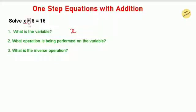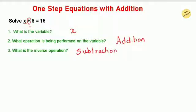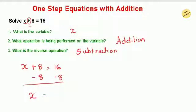Let's solve an addition equation: x plus 8 equals 16. The variable is x, the operation is addition, and the inverse operation is subtraction. Using the subtraction property of equality, let's subtract the constant from both sides. In this equation, 8 is the constant with addition, so we subtract 8 from both sides. On the left, it's left with x, and on the right, 16 minus 8 gives us 8.